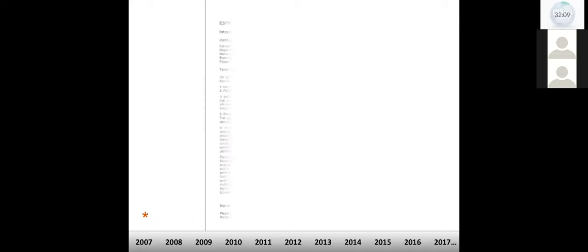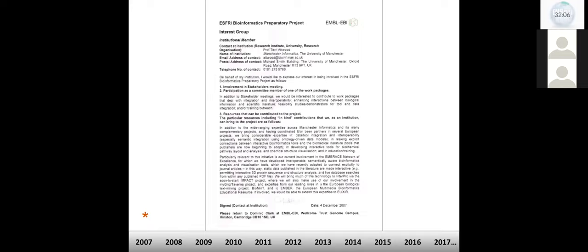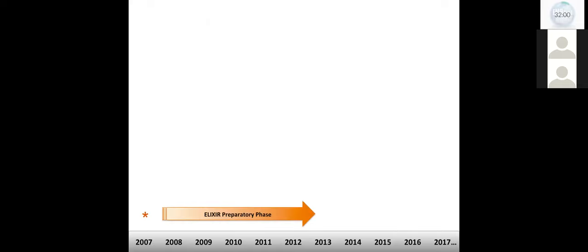I suppose for me, perhaps the earliest seed was an email I received in autumn 2007 inviting me to attend a meeting in Hingston and thereafter to submit an expression of interest to join a European infrastructure bioinformatics preparatory project. So this, of course, was the ELIXIR preparatory phase. And I was specifically invited to join ELIXIR's training strategy committee.